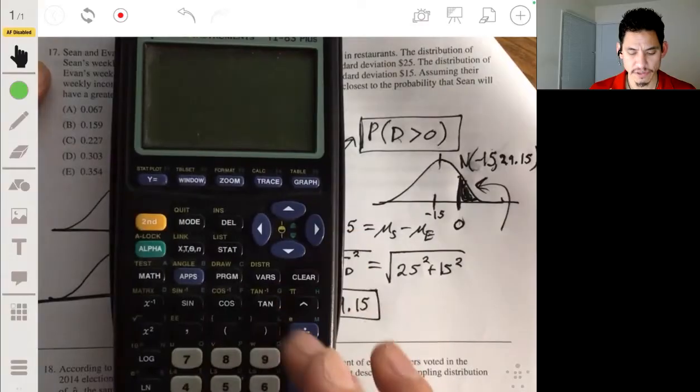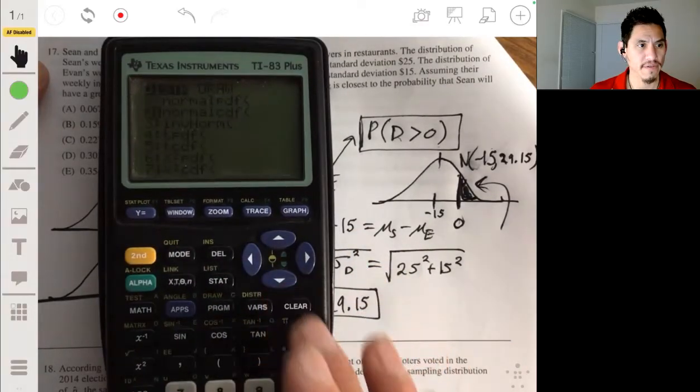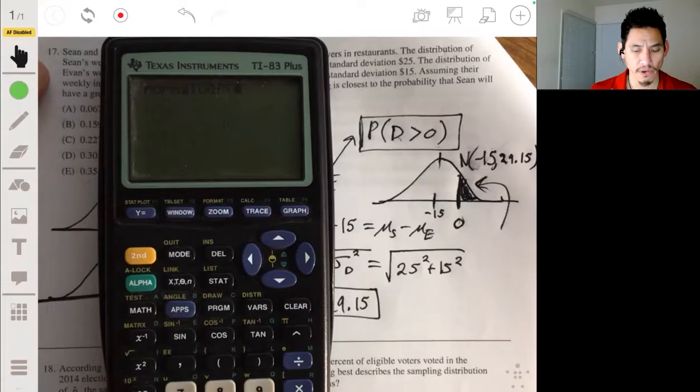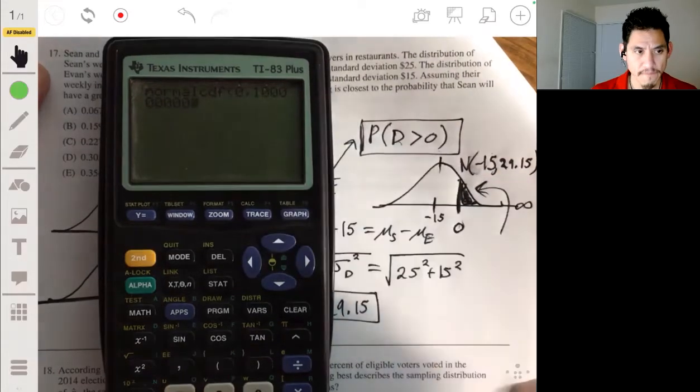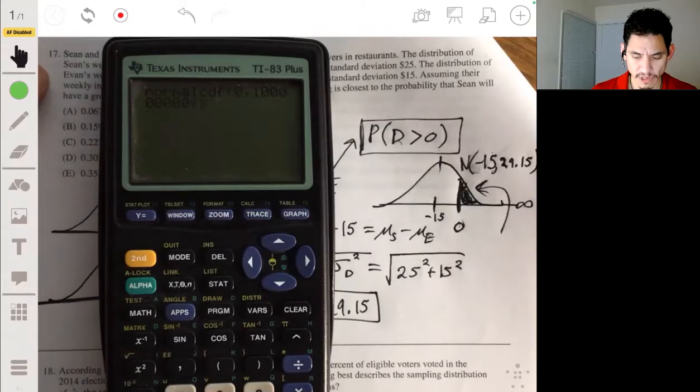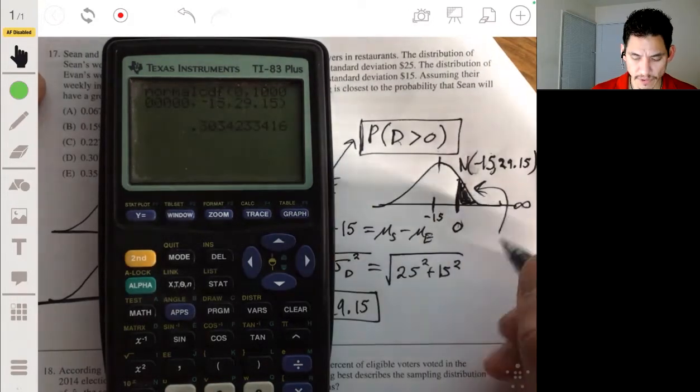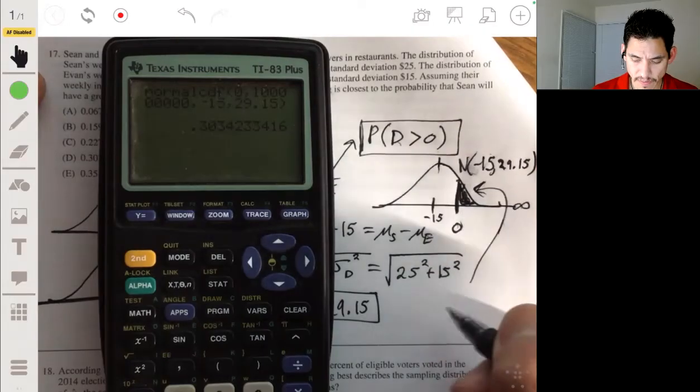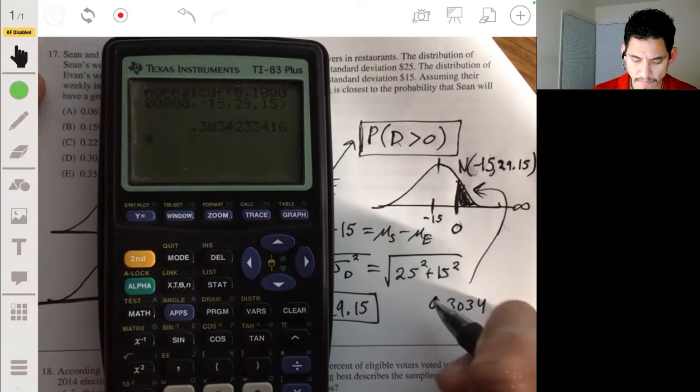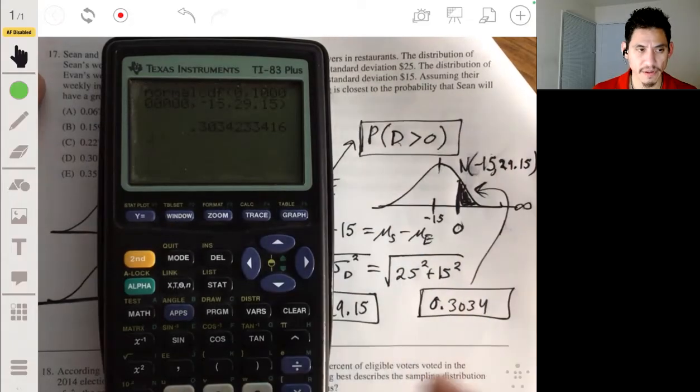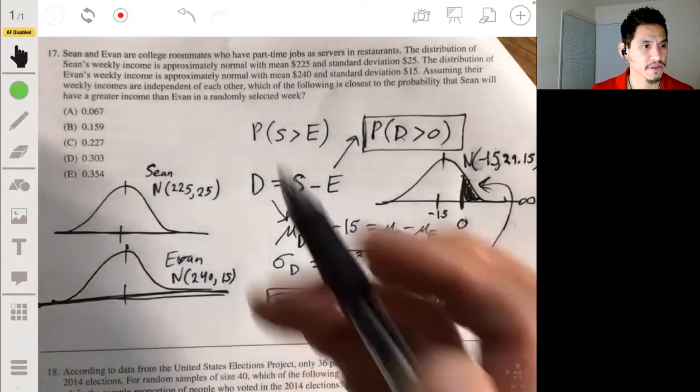So for that we can use our calculator. We go to our distribution function, normal CDF. The lower bound is 0. So 0 comma upper bound, it's like a very large number because we're just going from 0 to infinity. Comma the mean is negative 15, the standard deviation of 29.15. And that gives us a probability of about 0.3034. That's the area over there. And so the answer will be D.